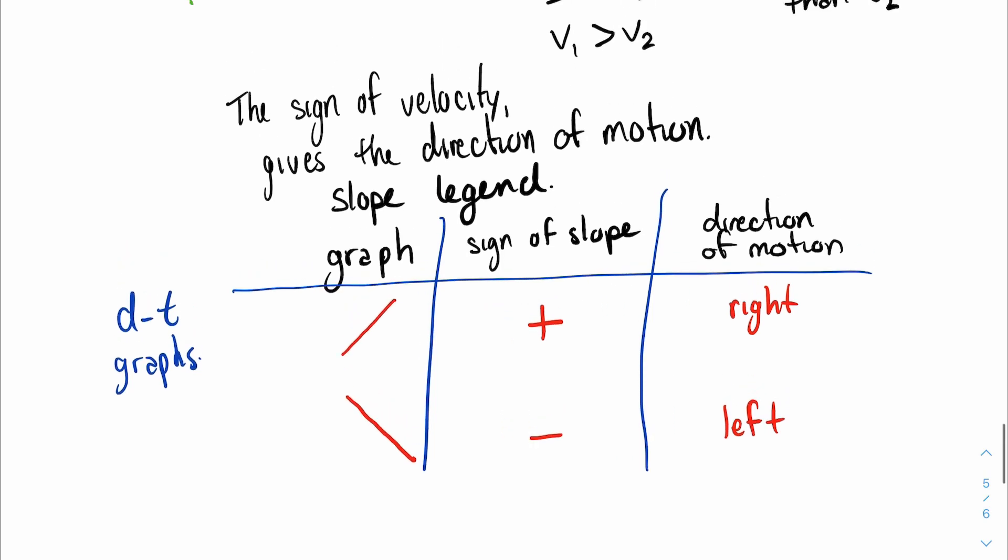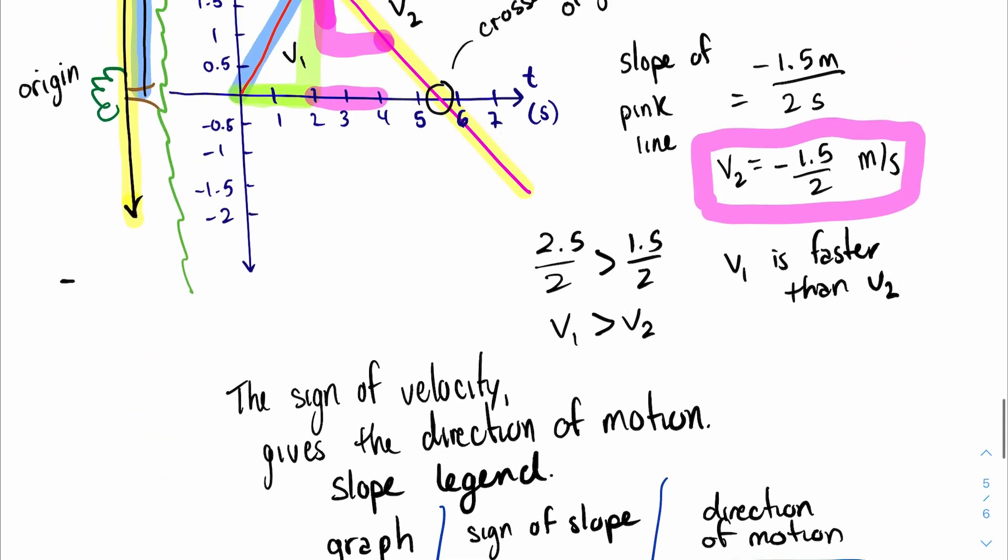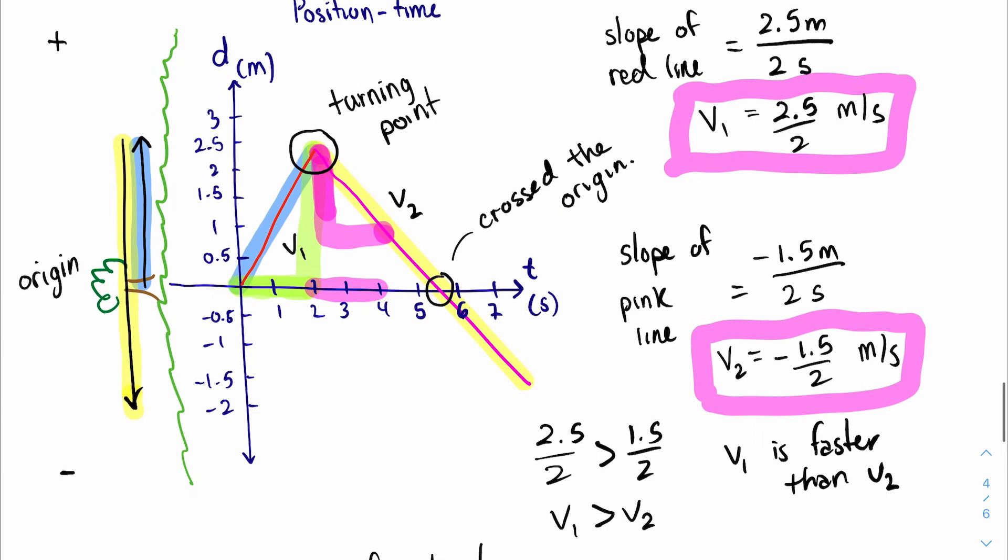So let's go back and see if it makes sense. Right, because v1 was positive it moves to the right. v2 is negative, it was moving to the left. So that makes sense.